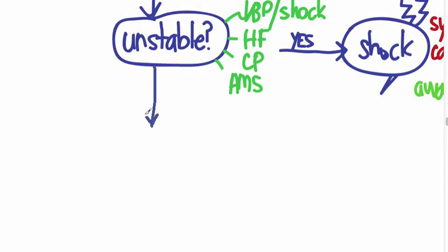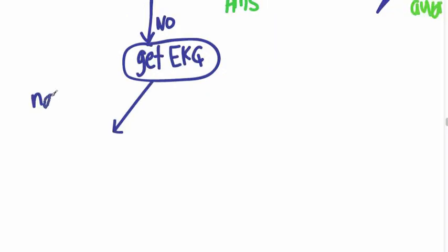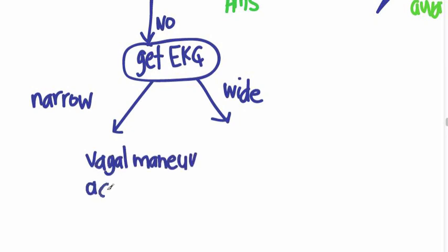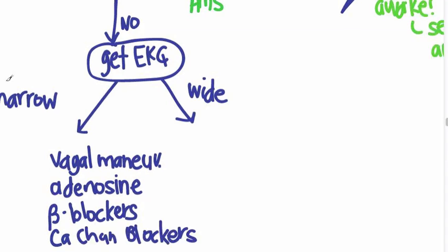So if they're not unstable, now you have some time to act and you can get an EKG and take a look at it. And if the QRS complexes are narrow, you're going to do something different than if they were wide. If they're narrow, you could try vagal maneuvers, adenosine, beta blockers, and calcium channel blockers. Now these drugs and maneuvers have the same action, which is to slow down conduction through the AV node.